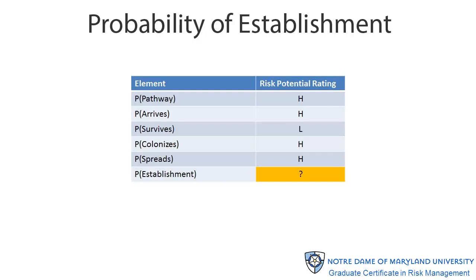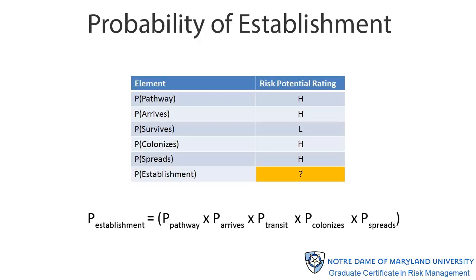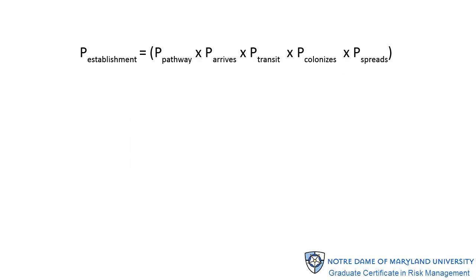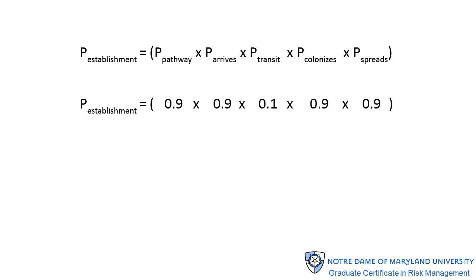Let's look at how you calculate the overall probability of establishment using the values shown in this table. Remember, our algebraic formulation of this problem is the product shown here. A quantitative assessment of the probability is always going to be preferred when it's available, but it is not available in this case. We do, however, want our qualitative probability assessment to mimic the qualities of a quantitative assessment as much as possible. To gain some insight into how best to do that, let's substitute some numbers for the qualitative assessment values.